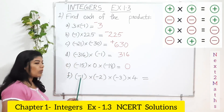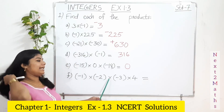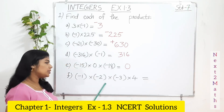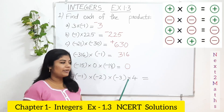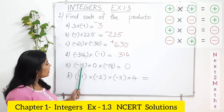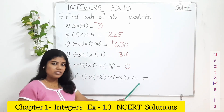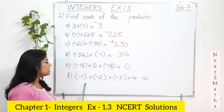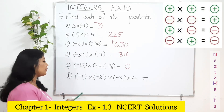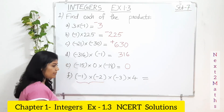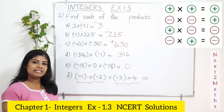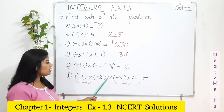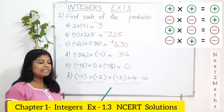Part F: negative 1 multiplied by negative 2, multiplied by negative 3, multiplied by 4. Here you have 4 integers in total. Whatever the number of integers, make pairs of 2. Take the first two as one pair and the next two as another pair. Negative 1 multiplied by negative 2: 1 times 2 is 2, and negative times negative is positive, so you get positive 2.